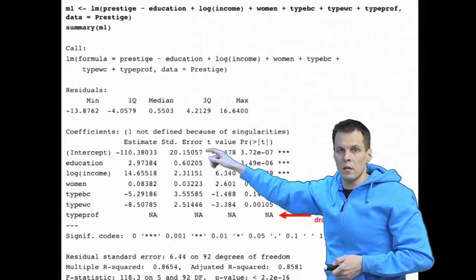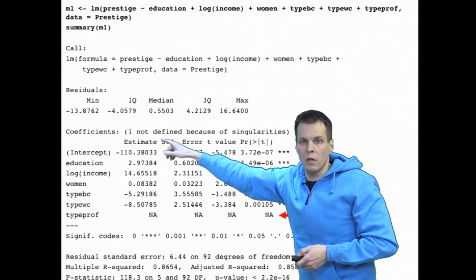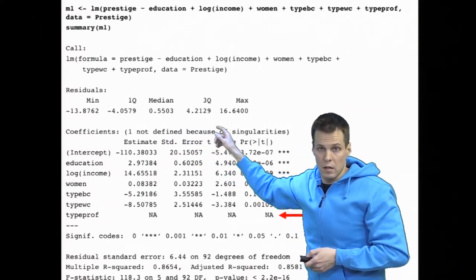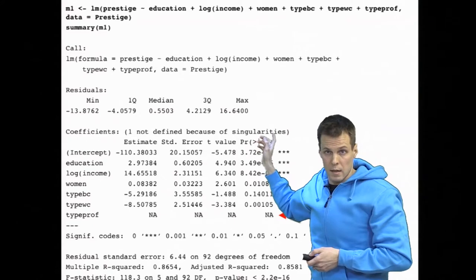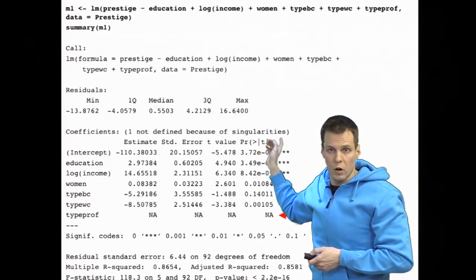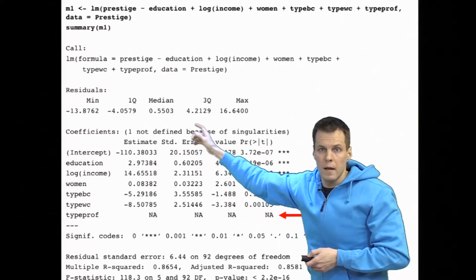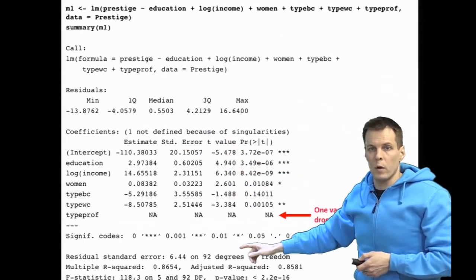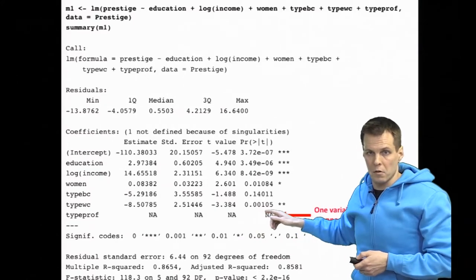We get a warning that not defined because of singularities. So that warning tells us that we are in violation of the no perfect collinearity assumption, and in the results we will see that one of these variables was dropped in the analysis.